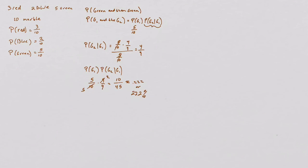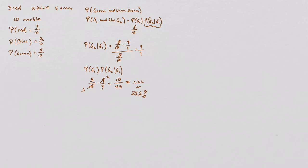Pretty straightforward problem — very much like Part A, where you find the probability of drawing a red and then a blue. Here you find the probability of drawing a green and then another green. You just have to find a way to make your notation clear so you're not getting confused. The first time I worked this on paper I had 'green' everywhere and couldn't keep track, so I switched to subscript notation. Just know you can do that whenever — as long as you can follow it and nothing gets mixed up, you're fine.